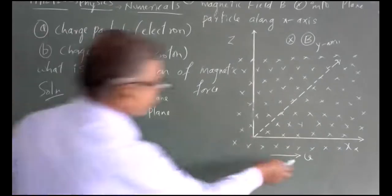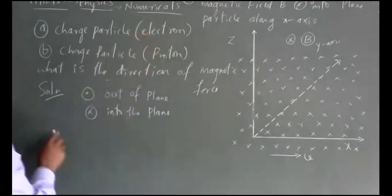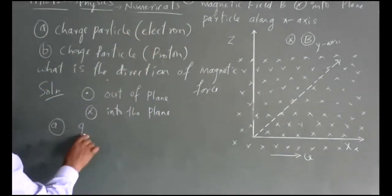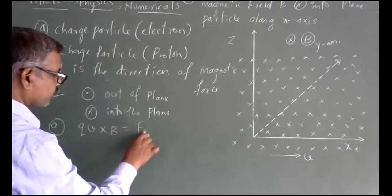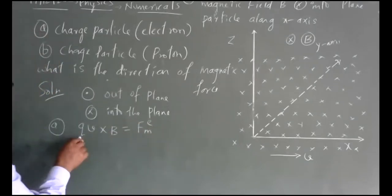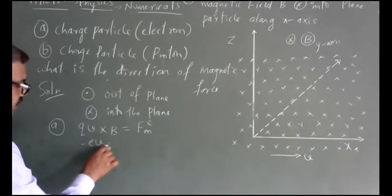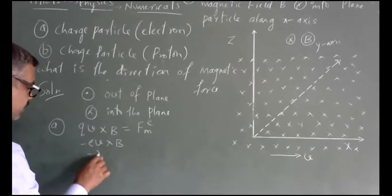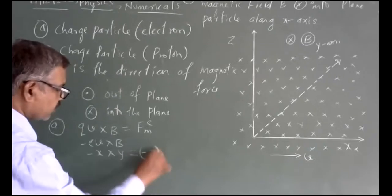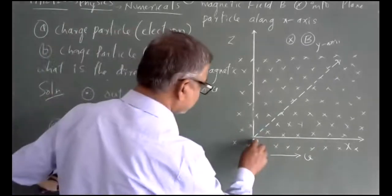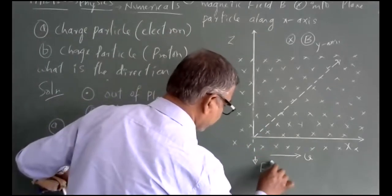In the first case, the charge particle is an electron. The charge q = −e, velocity is along the x-axis, and magnetic field is along the positive y-axis. So the magnetic force F = q(v × B) = −e(x̂ × ŷ) = −e(ẑ) = −ẑ direction. The magnetic force on the electron is along the negative z-axis, which is downward.